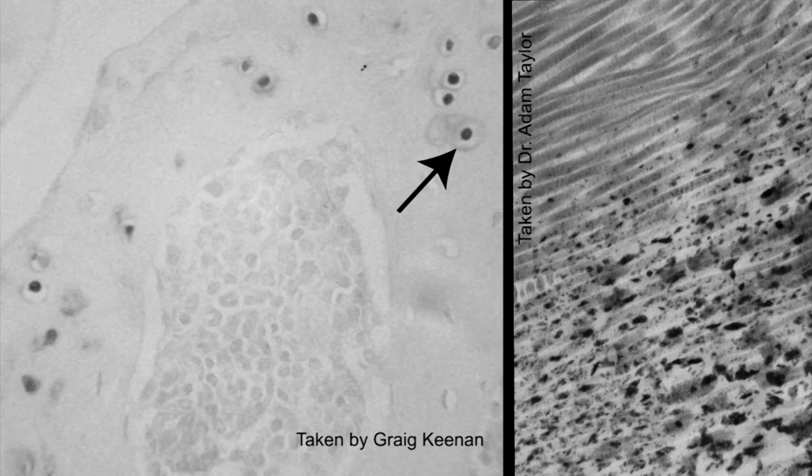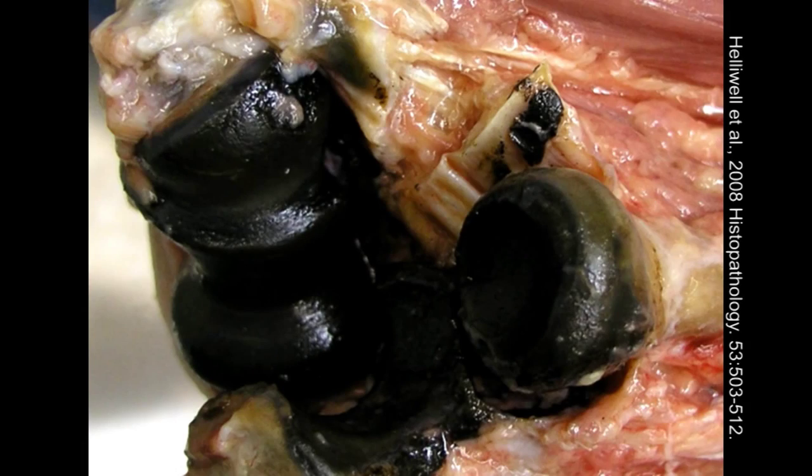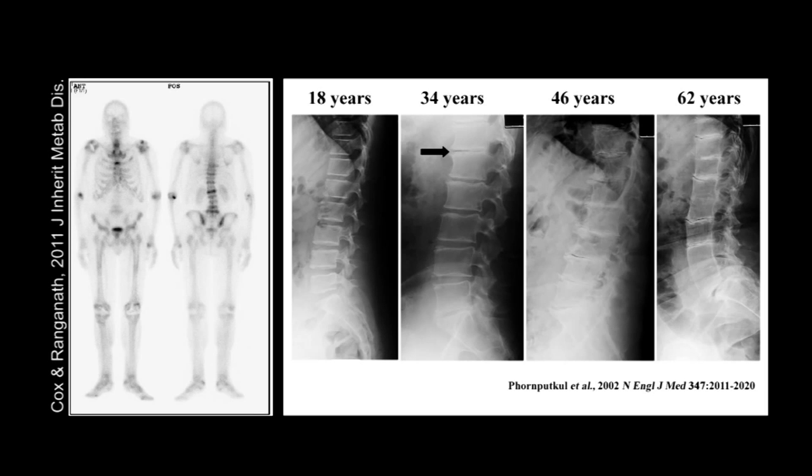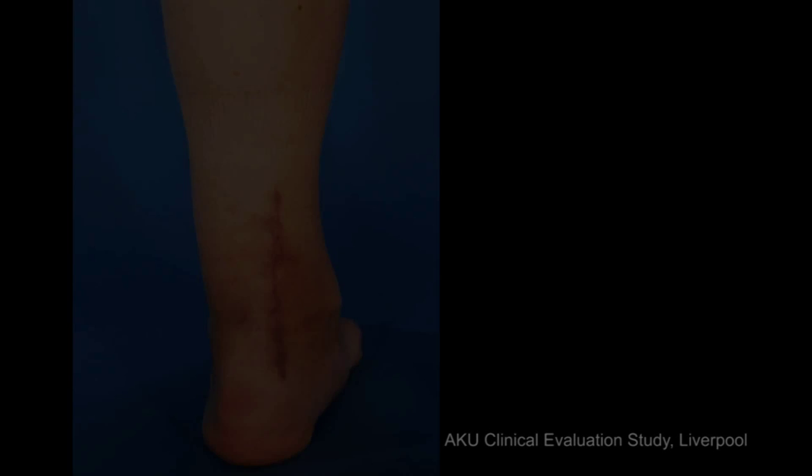The next picture illustrates an ochronotic elbow joint in its final stage. Usually, the only solution to overcome this process is joint replacement. Nevertheless, the first joint symptoms are back pain due to loss of vertebral joint space at the third to fourth decade, eventually leading to a total loss of joint space.